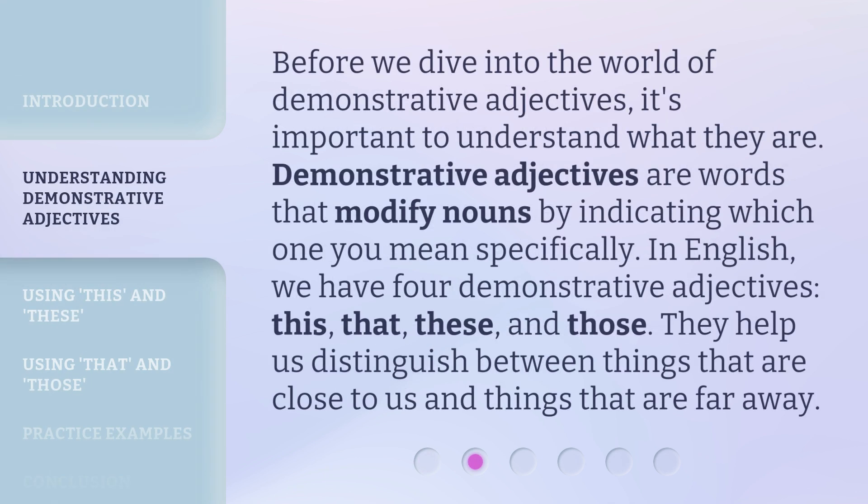Before we dive into the world of demonstrative adjectives, it's important to understand what they are. Demonstrative adjectives are words that modify nouns by indicating which one you mean specifically. In English, we have four demonstrative adjectives: this, that, these, and those. They help us distinguish between things that are close to us and things that are far away.